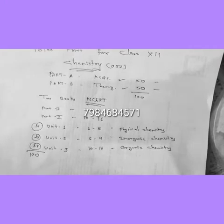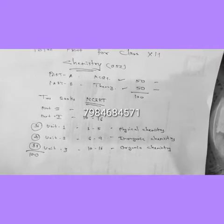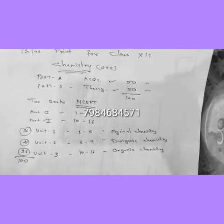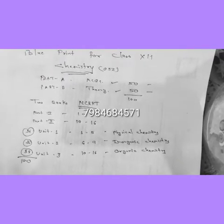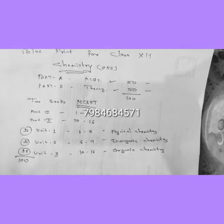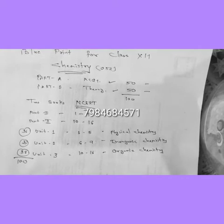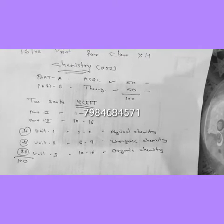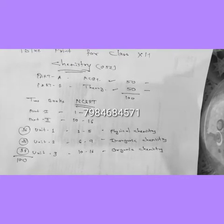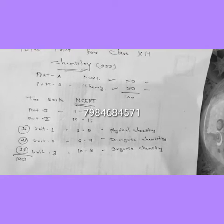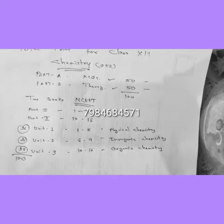As we know, the NCERT textbook for Class 12 contains 2 parts. Part 1 has chapters 1 to 9 and Part 2 has chapters 10 to 16. The Gujarat Government GSEB board has divided this textbook into 3 units.